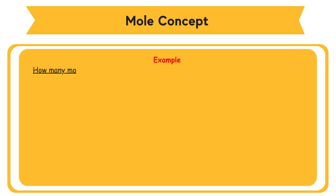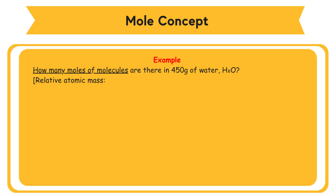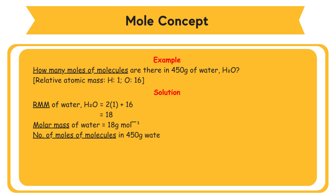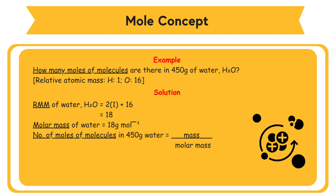Example: How many moles of molecules are there in 450 grams of water, H₂O? Relative atomic mass: H = 1, O = 16. Solution: Relative molecular mass of H₂O = 2 × 1 + 16 = 18, so the molar mass of water = 18 g/mol. The number of moles of molecules in 450 g of water = mass ÷ molar mass = 450 ÷ 18 = 25 moles.